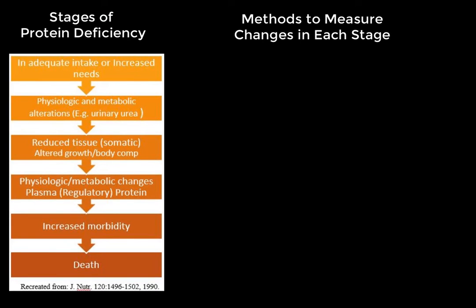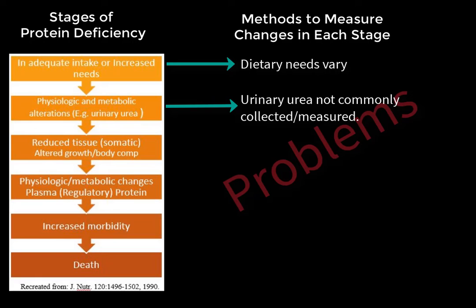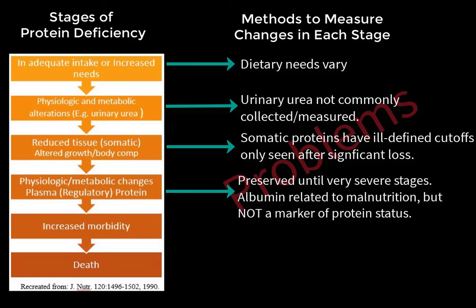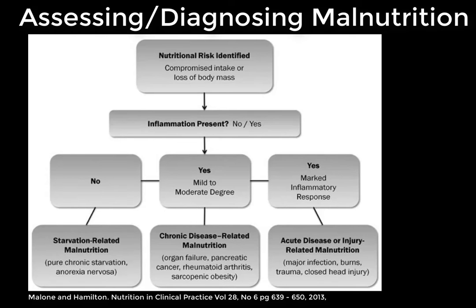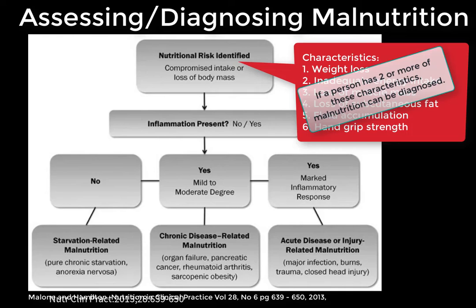There is a recurring theme across these various methods: there are problems with each. Dietary needs vary by age, activity, and disease. Urinary urea is not commonly collected or measured. Anthropometric methods have ill-defined cut-offs and only detect significant losses. Plasma proteins relate to malnutrition but are not direct markers of protein status. Despite these problems, malnutrition has measurable and important adverse effects on health and clinical outcomes, so assessment remains important. Six characteristics are assessed for malnutrition diagnosis: weight loss, inadequate energy intake, loss of muscle mass, loss of subcutaneous fat, fluid accumulation, and hand grip strength. At least two of these characteristics must be present to diagnose malnutrition, and the presence of inflammation identifies the type.